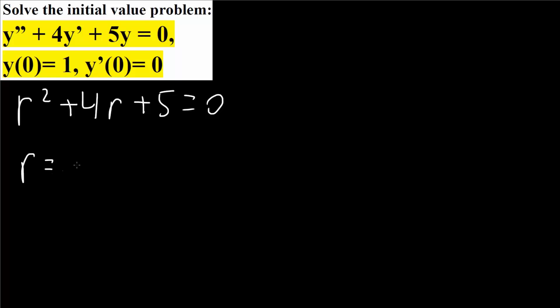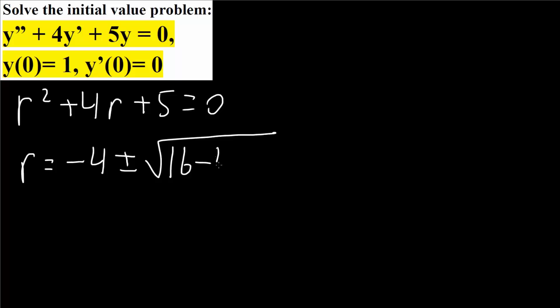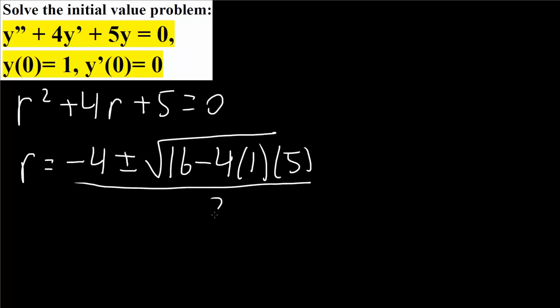We can't factor this, so we use the quadratic formula. r equals minus b, so minus 4, plus or minus the square root of b squared — 4 squared is 16 — minus 4ac, where a is 1 and c is 5, divided by 2a, so divided by 2. That gives us minus 4 plus or minus the square root of 16 minus 20, which is negative 4, divided by 2.